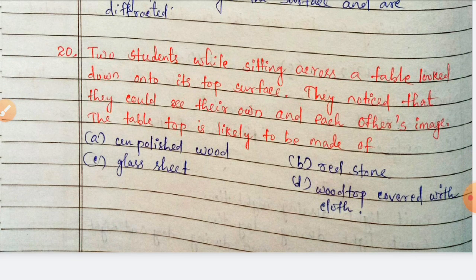Two students sitting across a table looked down onto its top surface and noticed they could see their own and each other's images. The table top is likely made of unpolished wood, red stone, glass sheet, or wood covered with cloth? The students can see images, so the table top is obviously made of glass sheet — option C is correct.